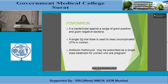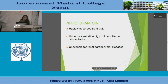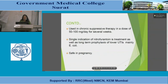Fosfomycin is a bactericidal agent active against both gram-positive and gram-negative bacteria; a single 3-gram oral dose is used to treat uncomplicated UTIs in women and may be prescribed as a single-dose treatment for pregnant women. Nitrofurantoin is rapidly absorbed from the GIT with high urine concentration but poor tissue concentration, making it unsuitable for renal parenchymal disease. It is used in chronic suppressive therapy at 50–200 mg per day for several weeks; its single indication is treatment and long-term prophylaxis of lower UTIs mainly due to E. coli, and it is safe in pregnancy.